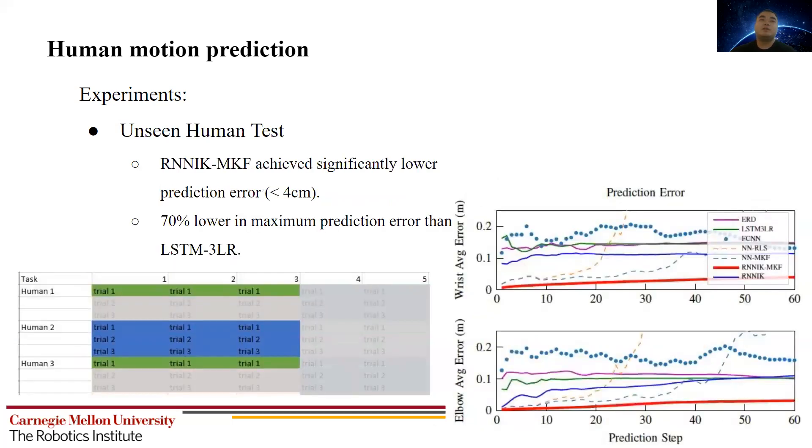The second test is for unseen humans. From the right figure, our method in red achieved the lowest error. Generally, the adaptations, either recursive least square or MKF, significantly decrease the prediction error. But recursive least square exploded for longer prediction steps.